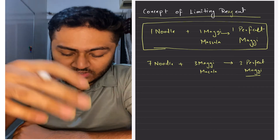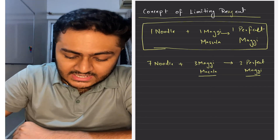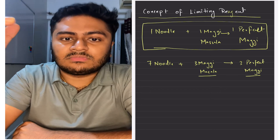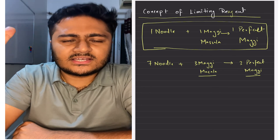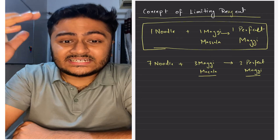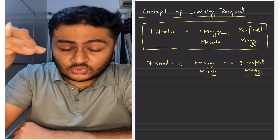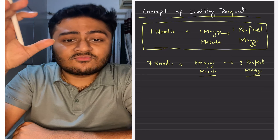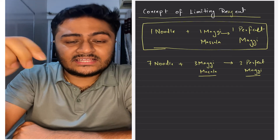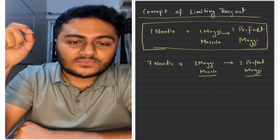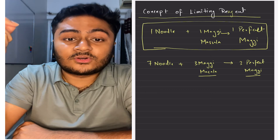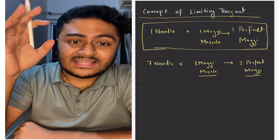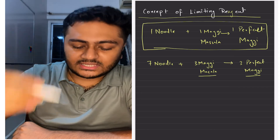What is the thing that dictates this entire reaction? Who decides how many perfect maggies can be made? You can easily see that the masala decides, because it is in less quantity. Therefore we can say the item which is in less quantity is deciding how much product will be produced. The item which is in less quantity is known as the limiting reagent.